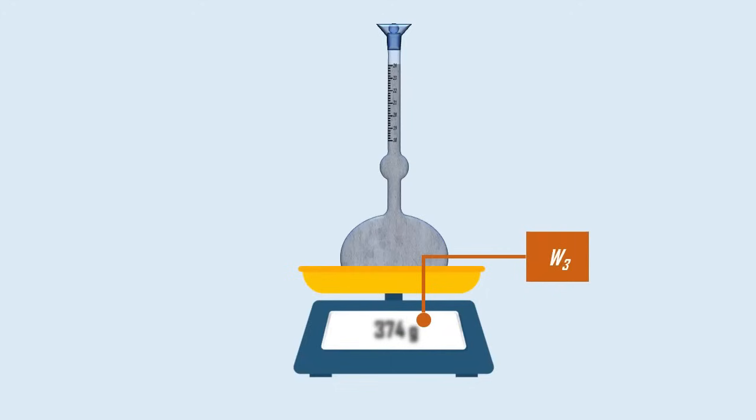The flask containing kerosene, cement, and a stopper is weighed and taken as W3.